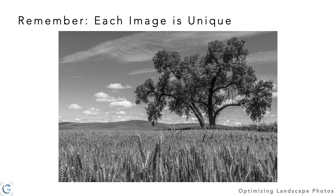Regarding bracketing for HDR: I think of it in two forms. There's bracketing because you're not totally confident about the exposure — typically three photos separated by one stop each: one stop dark, even exposure, one stop bright. If you're using HDR, you can separate by two stops. In landscape photography, three shots at two stops will typically do the trick.